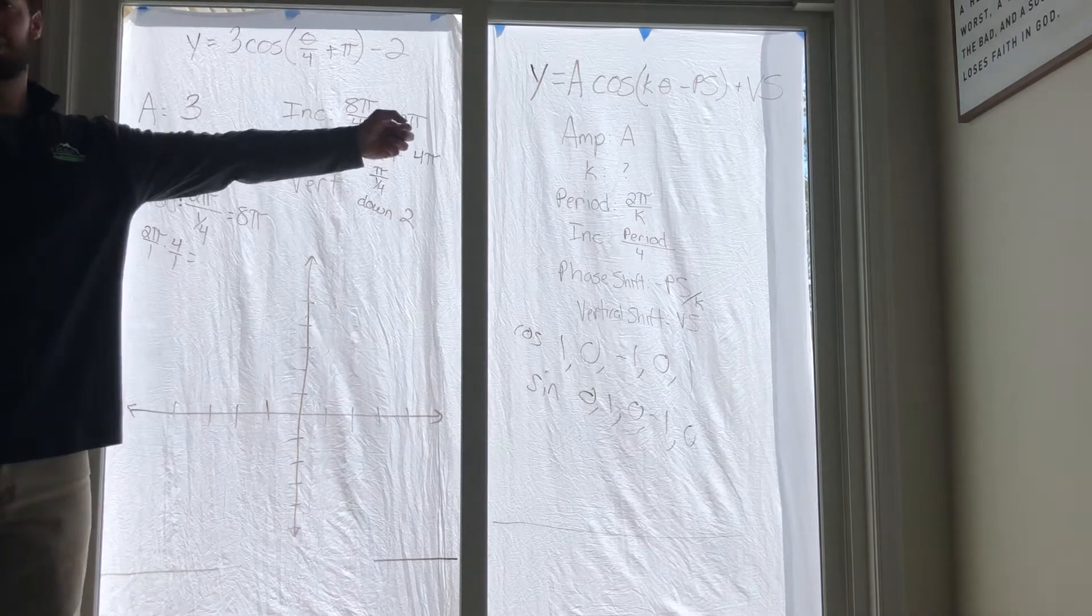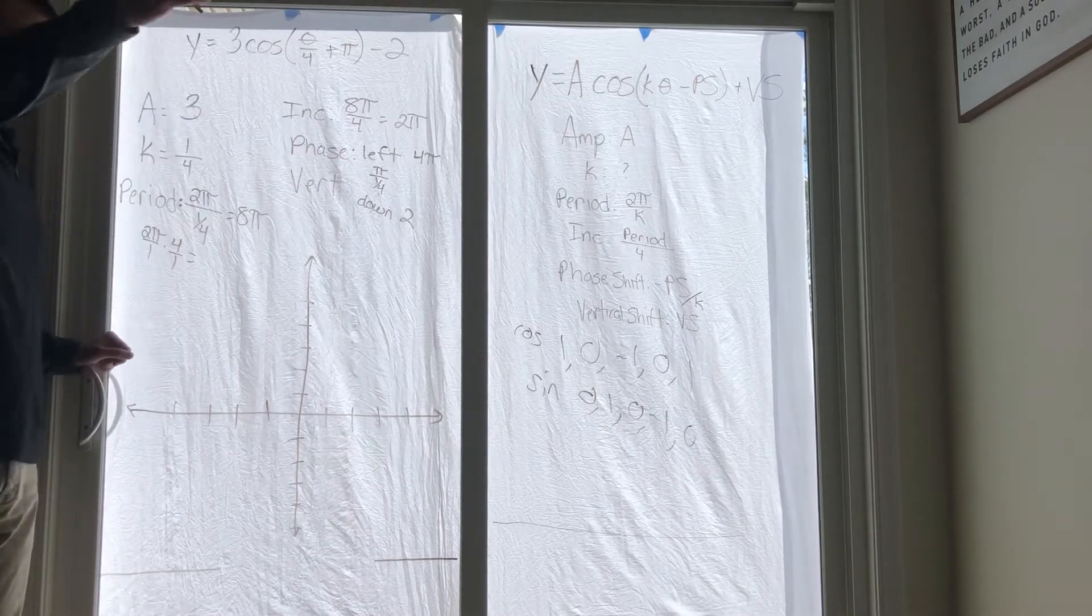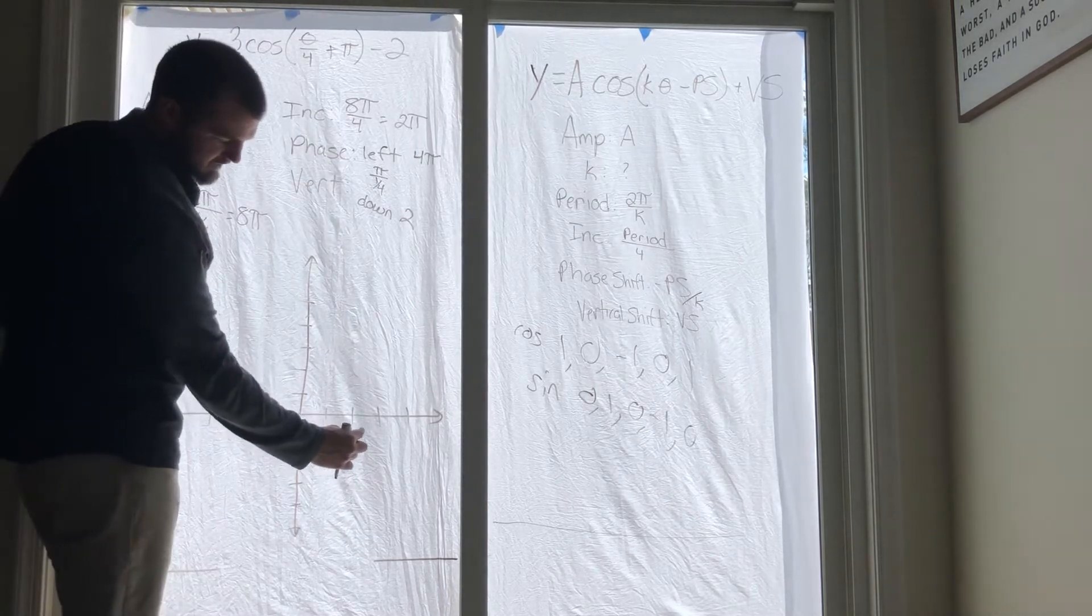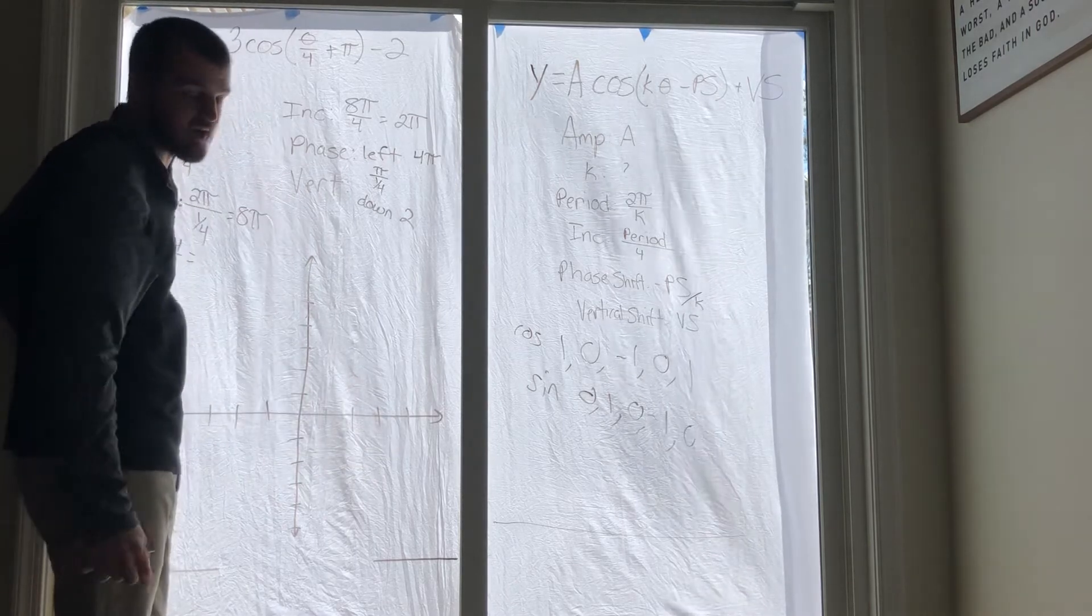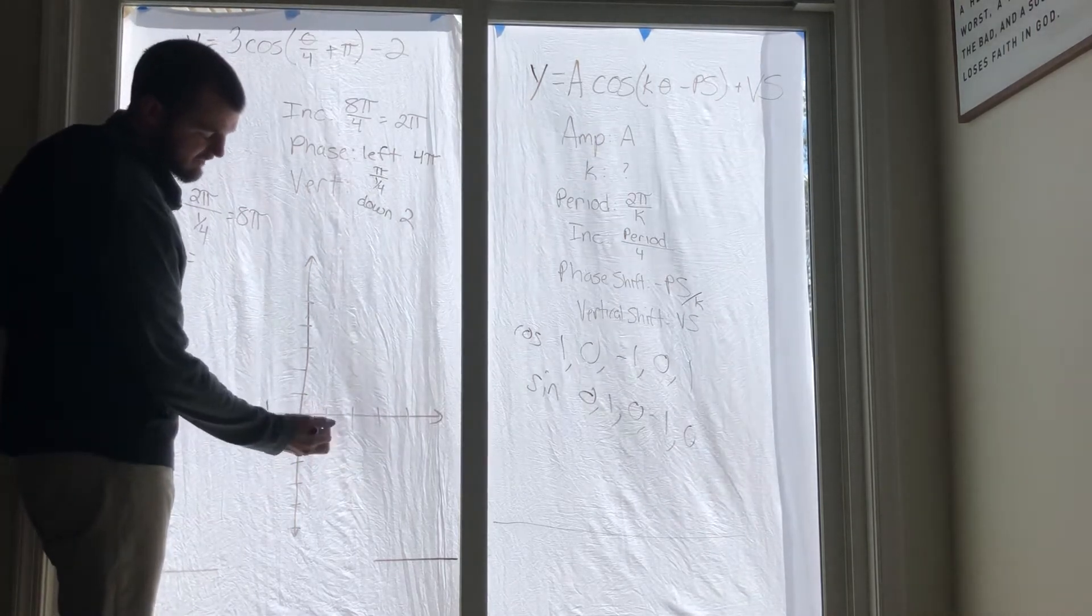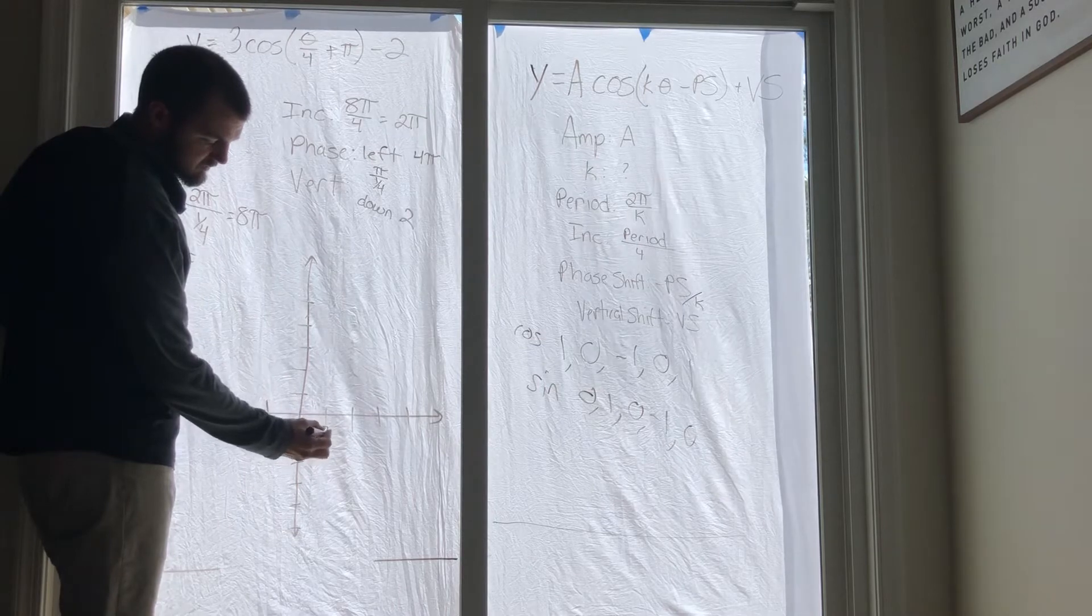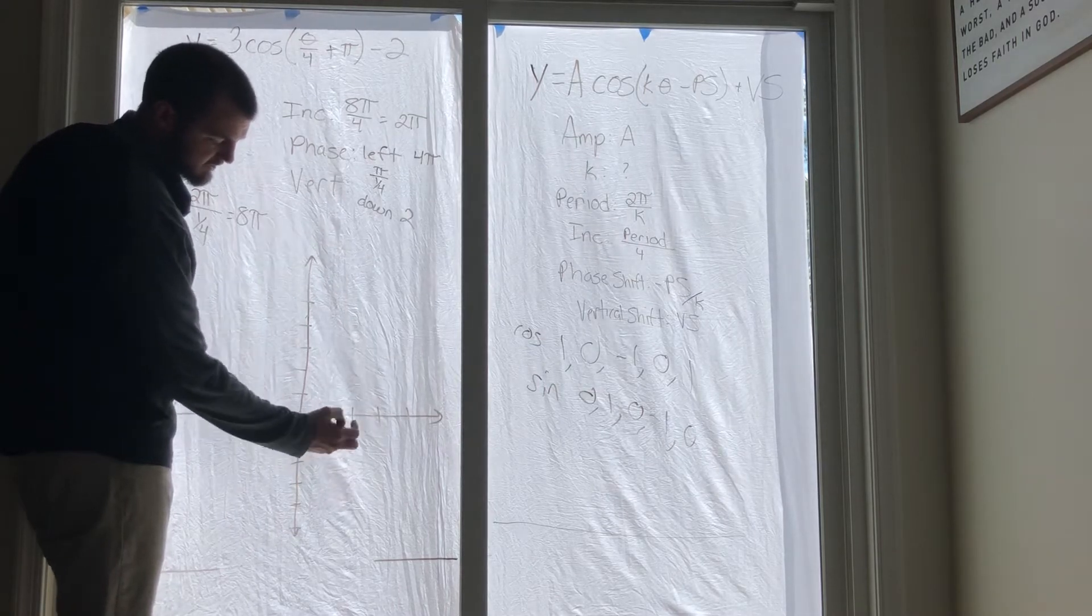So you're going to count by 2π's: 2π plus another 2π is 4π, plus another one is 6π, plus another one is 8π.